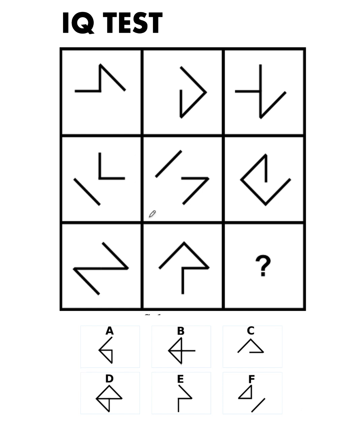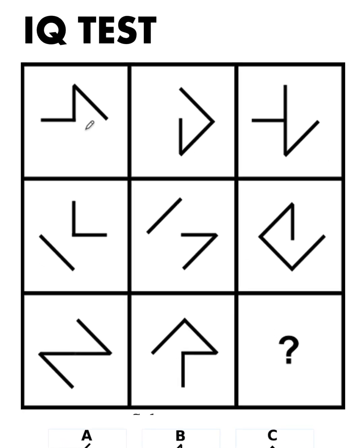Now let's solve this problem together. Our goal is to discover the pattern from the first to the second picture in order to find the third picture in its row. So let's trace the first picture using red. What is the relation between this first picture and the second picture in order to get this third picture?